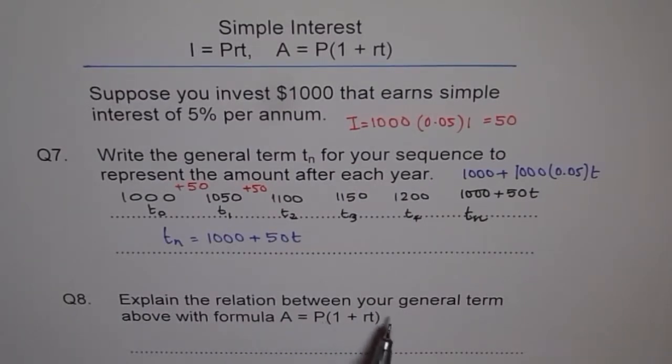Question 8. Explain the relation between your general term above with the formula. So with the formula, we will use the same formula and see if we get the same term. So A = P(1 + rt). So we say A = P is 1000 for us, 1000 × (1 + r is 0.05t). So let's expand it. If we expand it, 1000 × 1 is 1000. So we get 1000 + 1000 × 0.05 is 50, we get 50t. That is exactly the same formula. So this is a relation, how we can relate our simple interest formula with a sequence formula. It is an arithmetic sequence formula, which you just saw. So simple interest amount, which you get after every year, increases linearly and it follows your arithmetic sequence. That's how it is. Thank you.